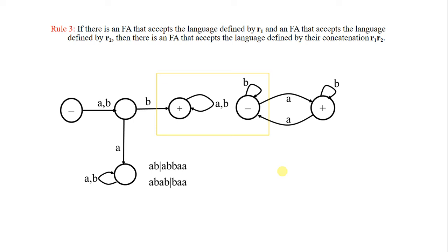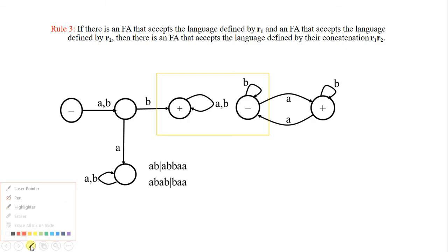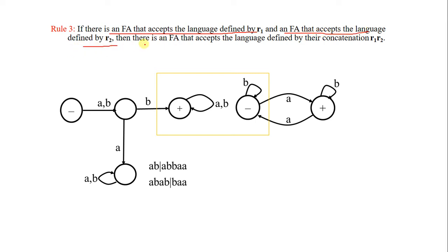To prove rule number three of Kleene's theorem, Lemma 3 states that if there's an FA that accepts the language defined by r1 and an FA that accepts the language defined by r2, then you can concatenate these two FAs — so there's an FA that accepts the language defined by r1 r2. Note that for concatenation, r1 r2 is not equal to r2 r1.